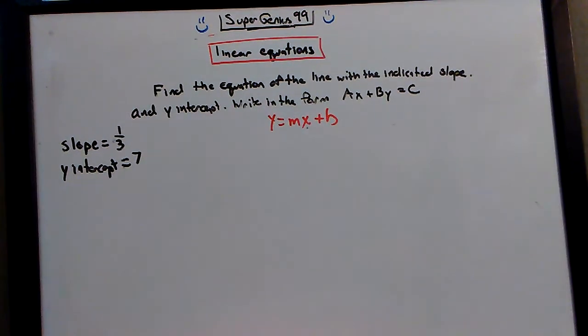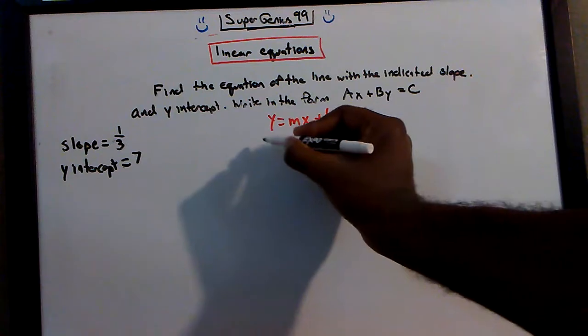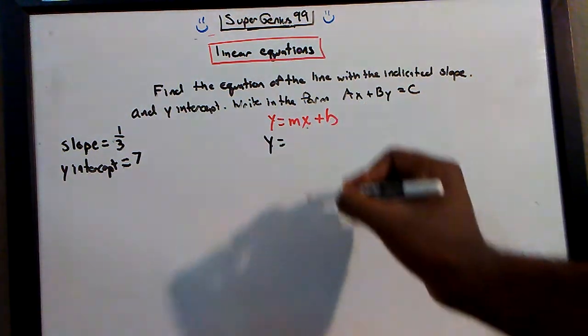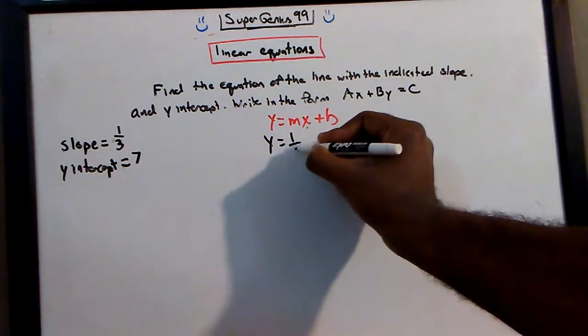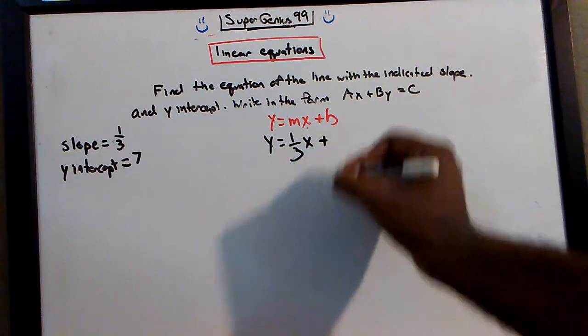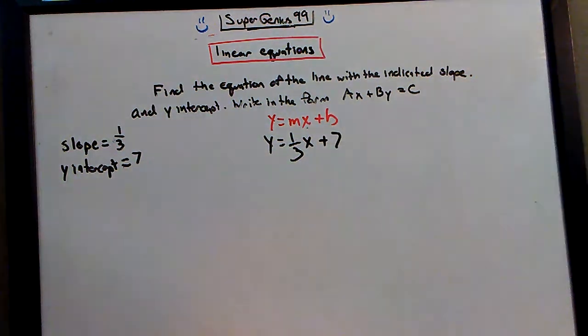Let's do another one. Here we have a slope of 1 third. We have a y-intercept of 7. Let's put it into our formula. So y equals the slope times x, 1 third x, plus the y-intercept, 7.